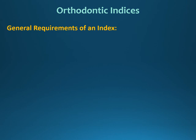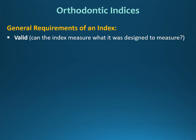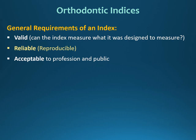There are general requirements of an index. Each index should be valid, which means it can measure what it was designed to measure. It should be reliable, meaning it is reproducible and gives the same result when recorded on different occasions and by different examiners. It should also be acceptable to the profession and public, and it should be simple and cheap.